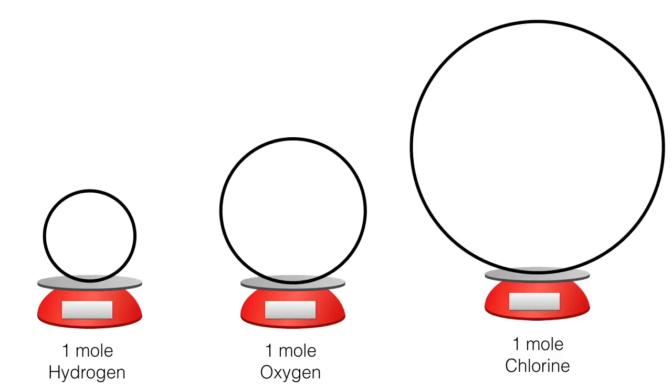Now, from here we have different atomic masses of different elements. If we take 6.022 × 10²³ atoms of hydrogen, it weighs 1 gram. The atomic mass of hydrogen is said to be 1 gram per mole. That is, 1 mole of hydrogen has exactly 1 gram weight.